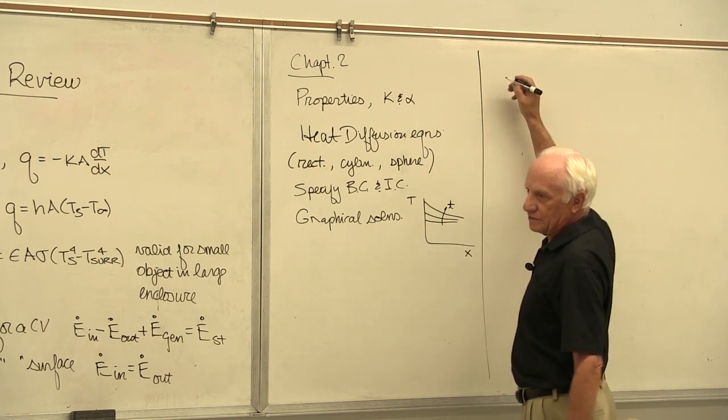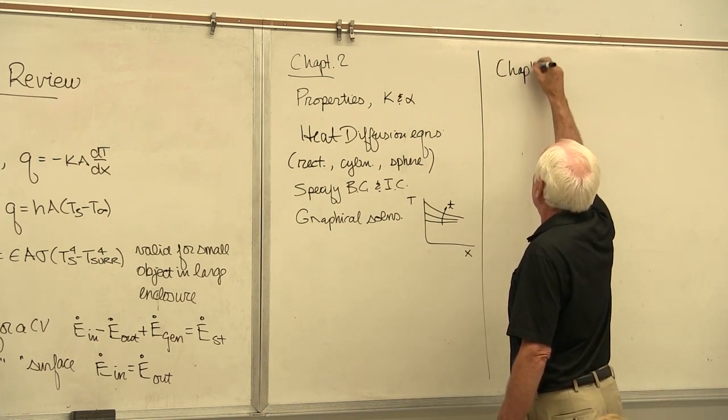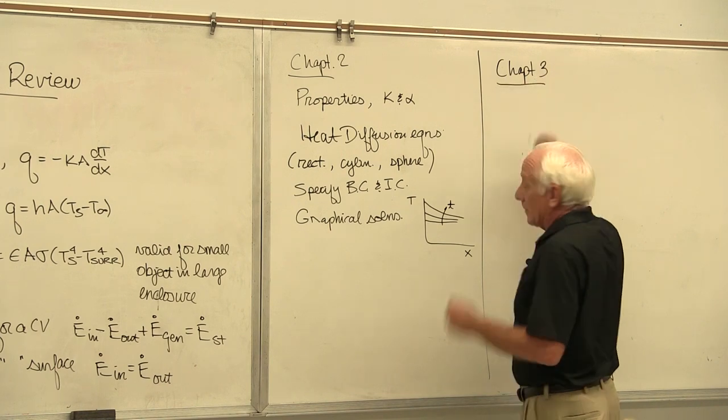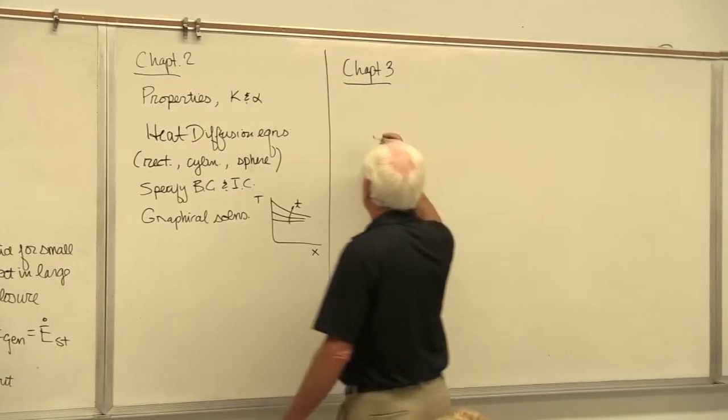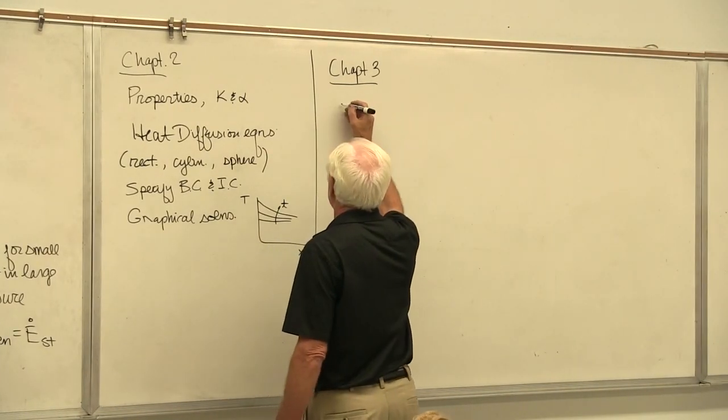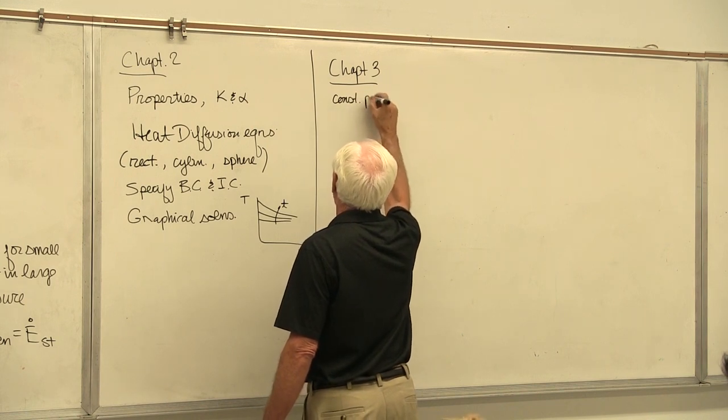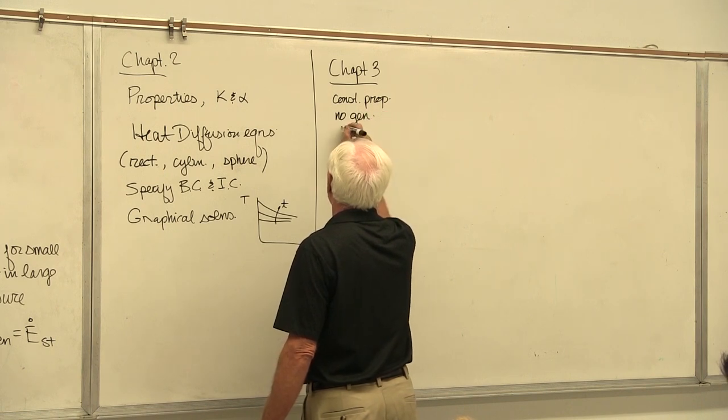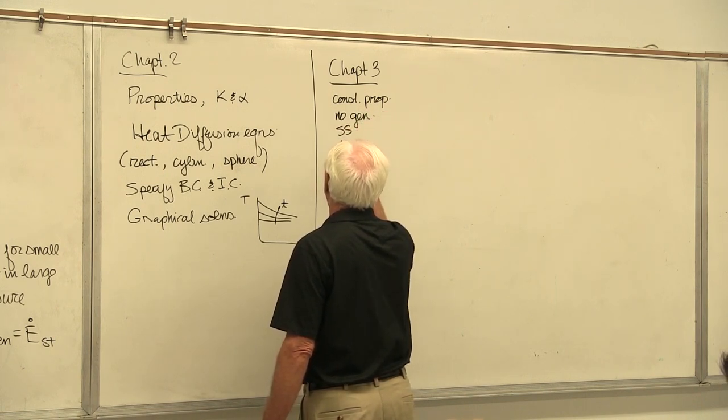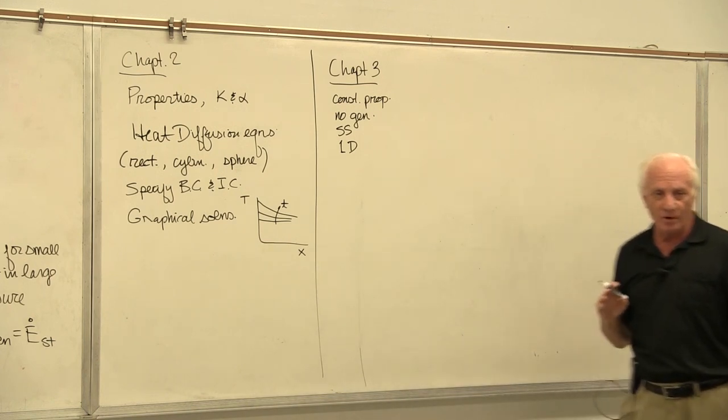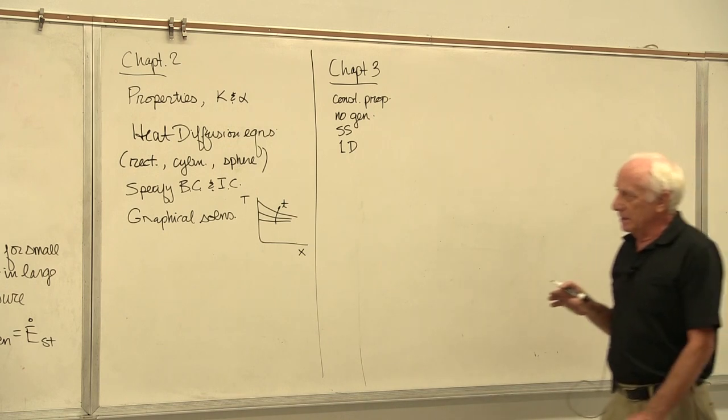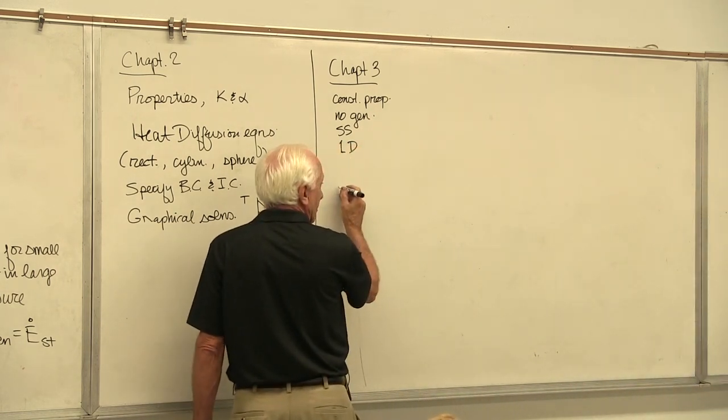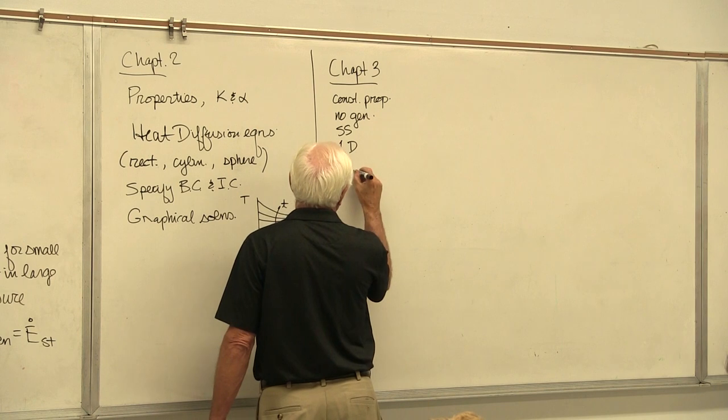Now we go to Chapter 3, a much more lengthy chapter. Chapter 3, we start out with a few assumptions. We pretty much assumed constant properties, no generation, steady state, and 1D heat conduction. Those are the four main properties we use to derive some important equations in Chapter 3. The equations we derived were thermal resistances. We have those for conduction and convection.